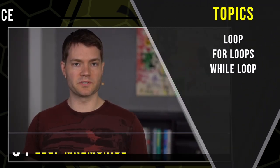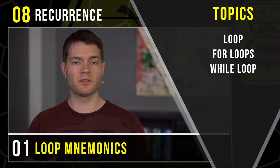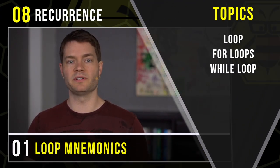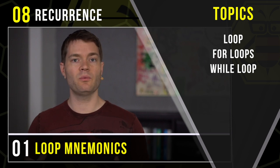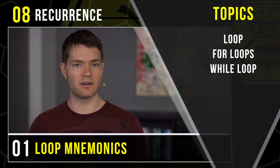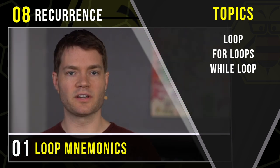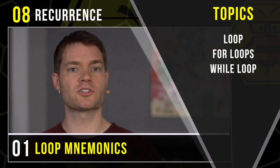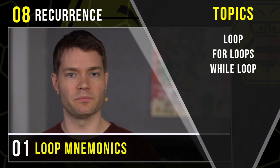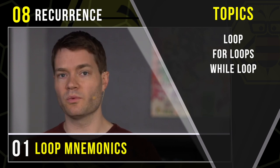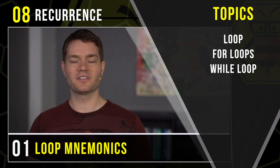First, we're going to talk about loops — what a loop is, what the point of a loop is in any programming language, and how we can actually break out of a loop when we're done with it. Next, we're going to talk about a special type of loop called a for loop, and what that's for. And finally, we'll talk about a different type of loop called a while loop.